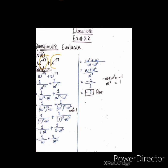اگلا question: ω^(-13) + ω^(-17)۔ سب سے پہلے powers کو positive بنائیں۔ reciprocal لینے سے ω^(-13) = 1/ω^13 اور ω^(-17) = 1/ω^17 بن جائے گا۔ 13 تین کا multiple نہیں: ω^13 = ω^12 × ω = (ω³)^4 × ω۔ 17 بھی تین کا multiple نہیں: ω^17 = ω^15 × ω² = (ω³)^5 × ω²۔ جہاں ω³ ہے وہاں 1 put کریں۔